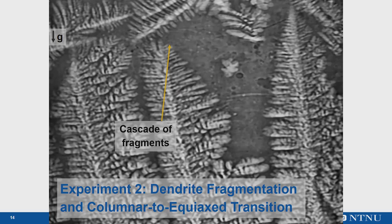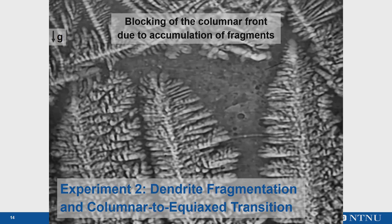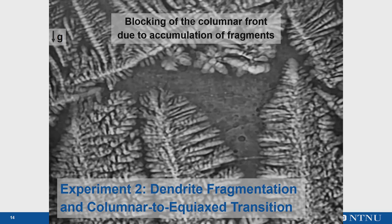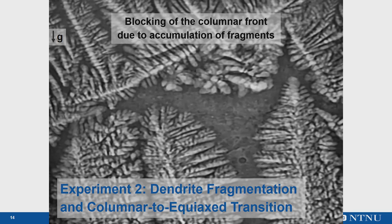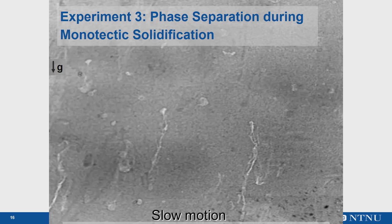This cascade of secondary fragments spreads laterally across the field of view and the columnar front is completely blocked from further growth. The irregular microstructures forming after fragmentation are believed to represent the initial stages of columnar to equiaxed transition, a variation in the morphology of the dendrites that can usually be observed in many castings. In this second experiment, I showed dendrite fragmentation and columnar to equiaxed transition in an aluminium 28 weight percent copper alloy, with the temperature gradient set anti-parallel to gravity. The first fragmentation is not an isolated event but generates a cascade of fragments that accumulate ahead of the front, blocking the columnar front and leading to a columnar to equiaxed transition.